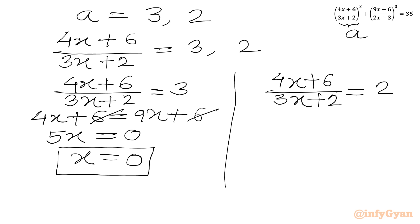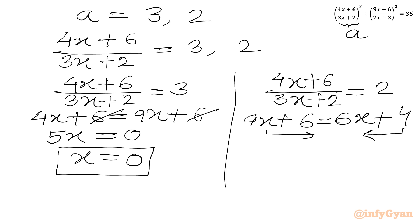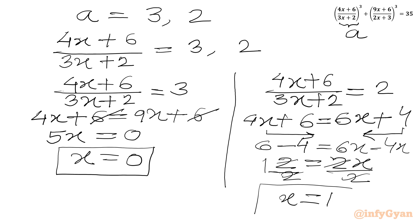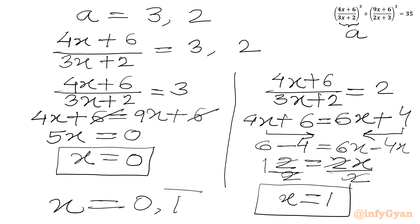For the second equation, (4x plus 6) over (3x plus 2) equal to 2: cross-multiplying gives 4x plus 6 equal to 6x plus 4. Taking 4x to the right and 4 to the left: 6 minus 4 equals 6x minus 4x, so 2 equals 2x. Dividing both sides by 2, we get x equal to 1. So we have two solutions: x equal to 0 and x equal to 1.